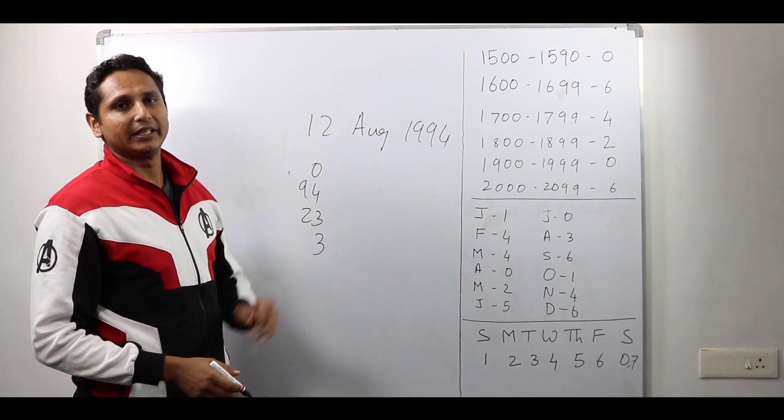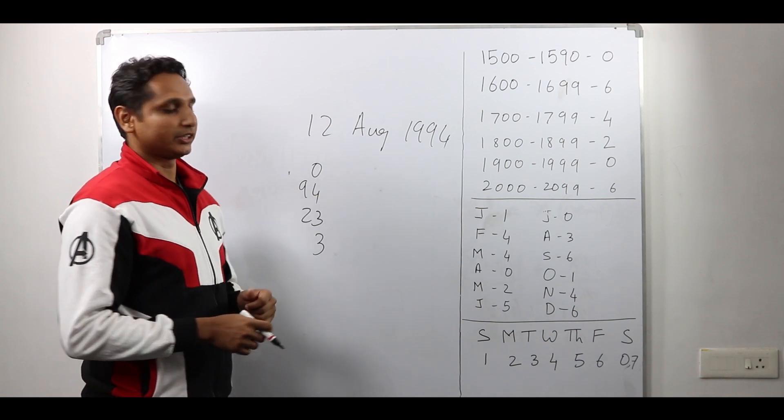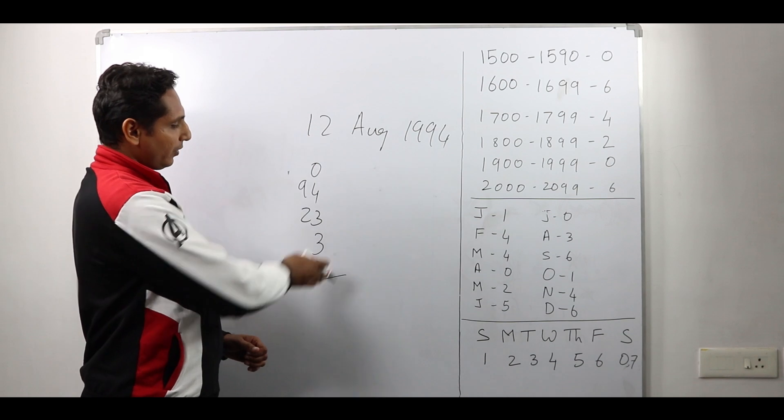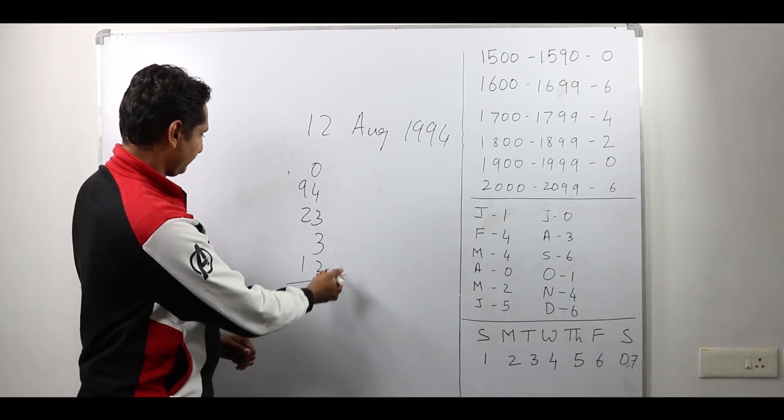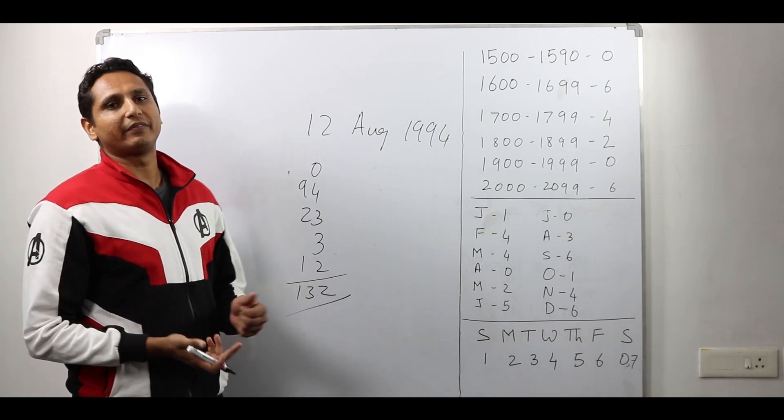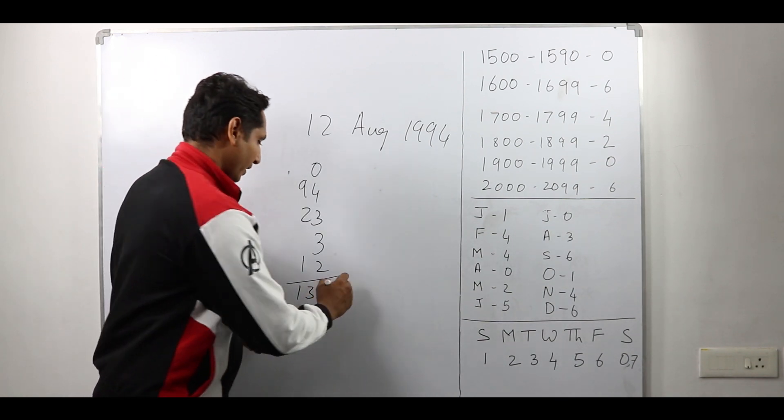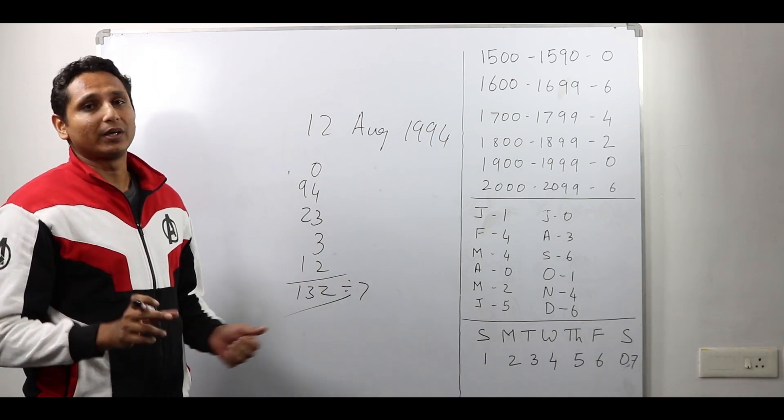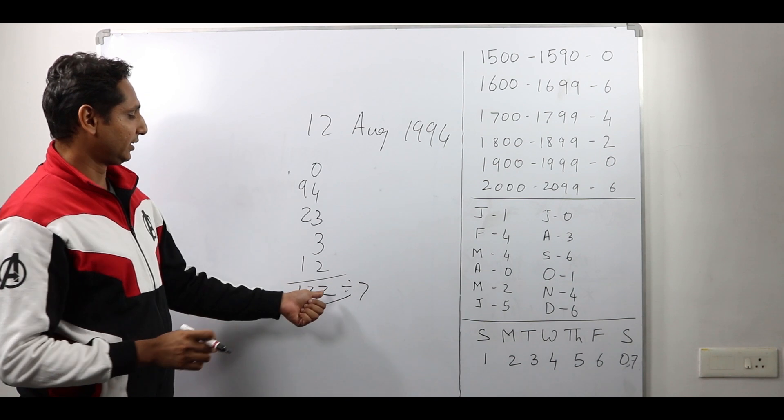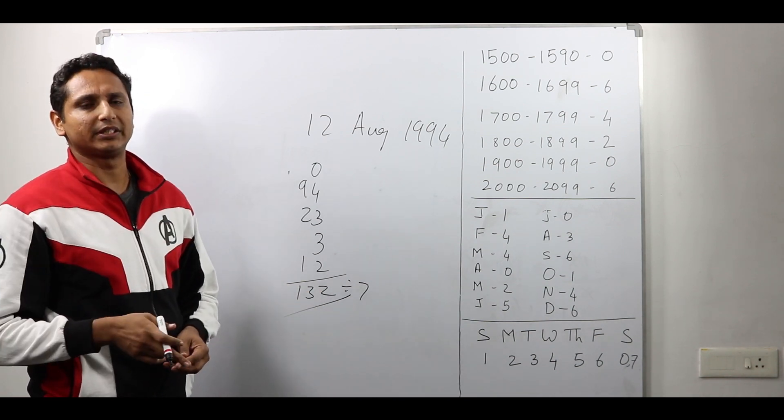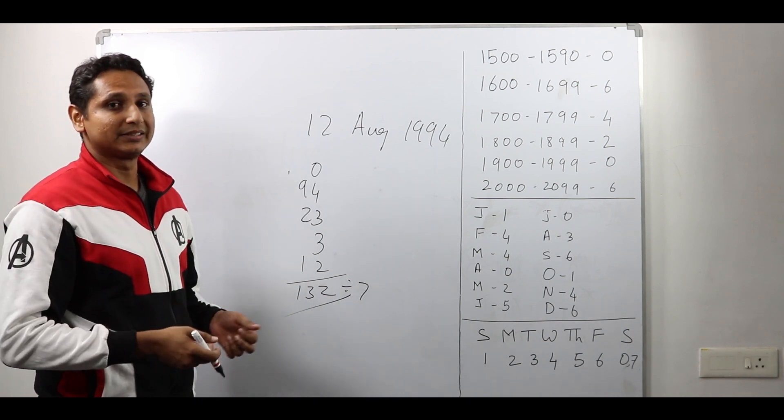Finally, it is the day which is 12. I write that. Now I have to sum all this which comes to 132 and this has to be divided by 7. And check what the remainder is. In this 132, I remove 70, 62 remains which is one short of 63. So the remainder here is 6.